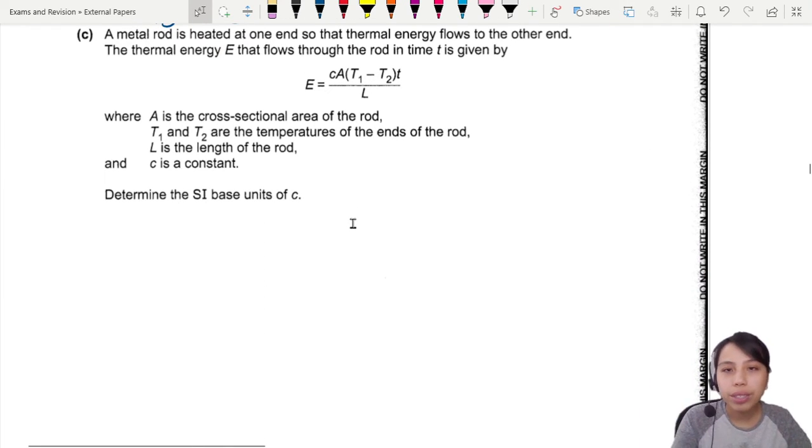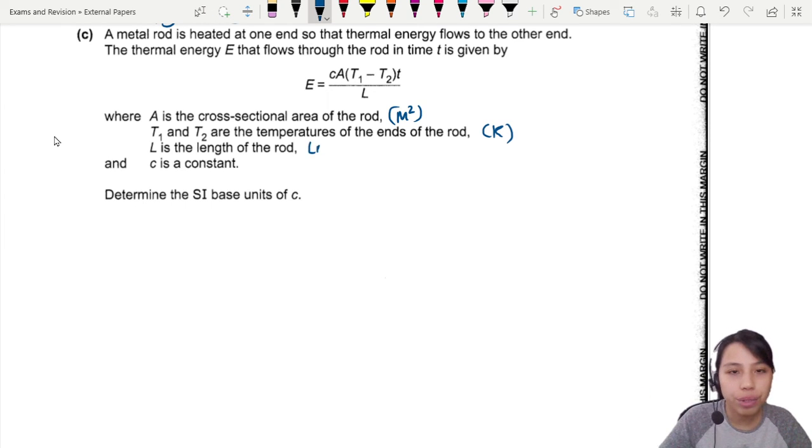A metal rod is heated at one end, so thermal energy flows out. If I see this base unit, I don't need to know the physics. I just need to know what are these alphabets here. A is cross-section area of the rod. I'm going to write there m squared. T are temperatures. I'm going to write Kelvin as my temperature. Not Celsius. Kelvin. L is the length of the rod, so meters. And C is a constant.